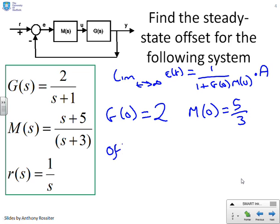And therefore, the offset is given by simply plugging these numbers in. And I'm going to get 1 over 1 plus 10 over 3. And you can see the target has got magnitude 1 because R of S is 1 over S. So A is 1. So I don't need to add that. So if I now multiply through by 3, I'll get 3 over 13. I'm not going to solve that anymore.